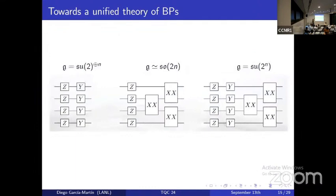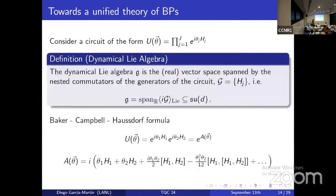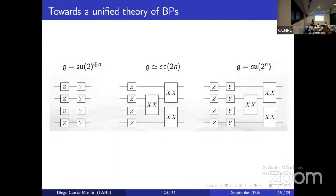As examples: a circuit with single-qubit gates gives generators that commute to yield all single-qubit Paulis — we get SU(2) independently per qubit, so a direct sum. A very important example is parametrized matchgate circuits with RC and RXX rotations, whose algebra is isomorphic to the special orthogonal algebra SO(2n). If we add RY rotations, the circuit becomes universal and the algebra is SU(2^n).